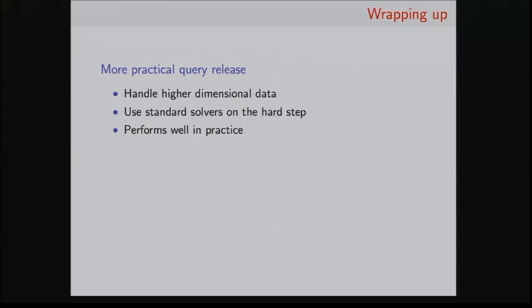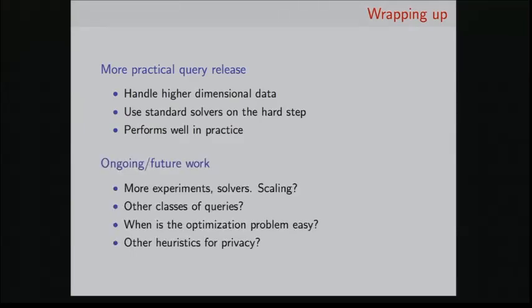Just wrapping up really quickly, I presented a way to give more practical query release. So the main goal is to handle higher dimensional data. And we want to use standard solvers on the hard step. And it seems to perform well in practice, though we really have to run more experiments to really know if we've just gotten lucky so far or not. And some ongoing future work. We can try different solvers as well, and I'm also interested to see how this might scale with a number of attributes, whether we can go to 2,000 or 5,000 or 20,000 maybe. Other classes of queries are possible. This will change the optimization problem, but should, in principle, be able to do this also. And there might be cases when the optimization problem is easy for certain classes of queries that we haven't found any yet. And there may be other heuristics for privacy that we have not considered yet. And that's all. Thanks.